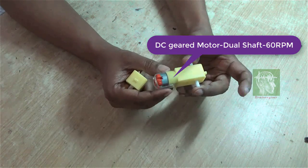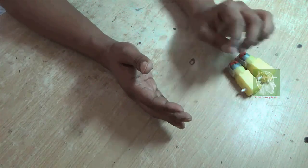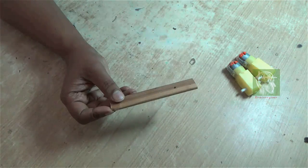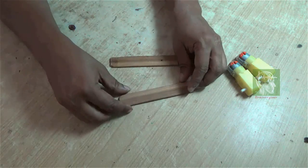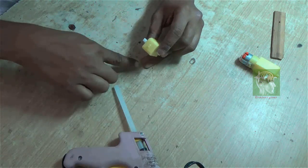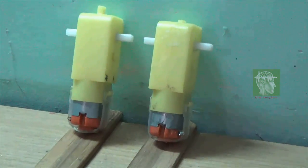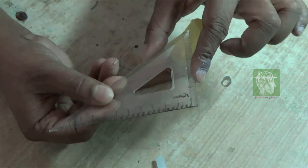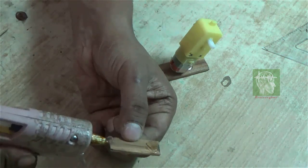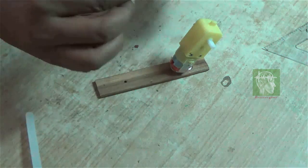You need for this 260 rpm DC geared motor and some wood pieces. Now you glue the motor and use the scales to make the angle of the motor 60 degrees.